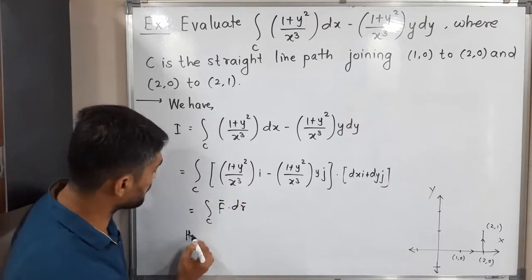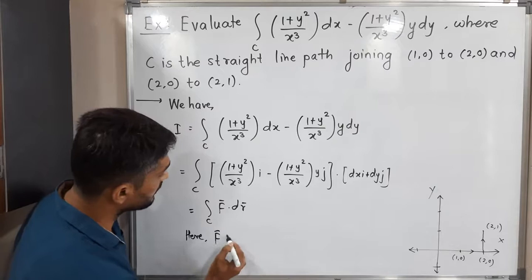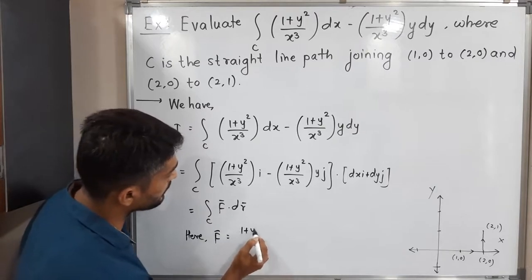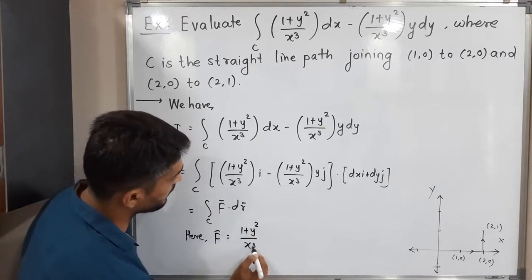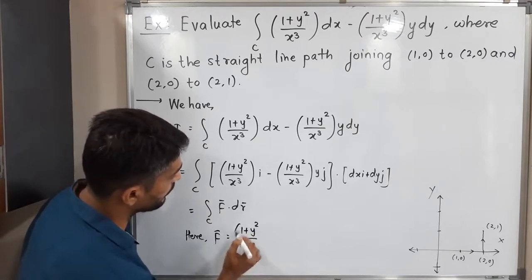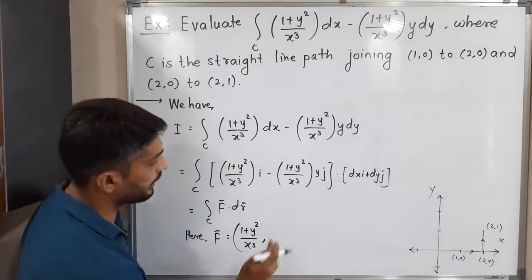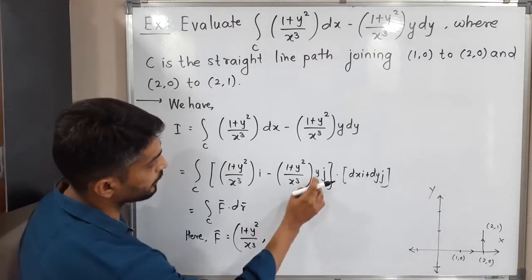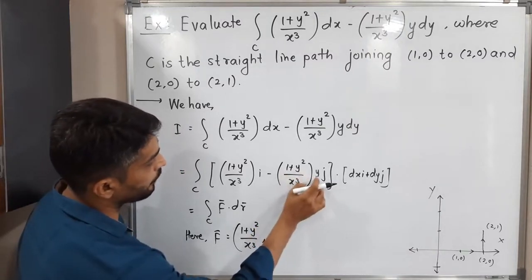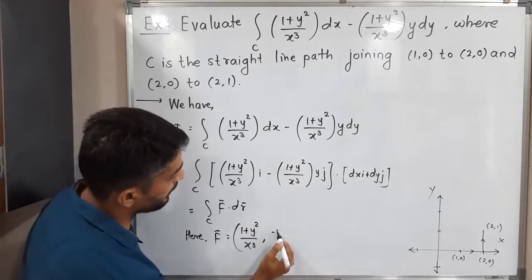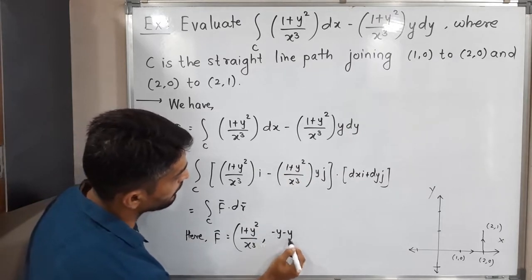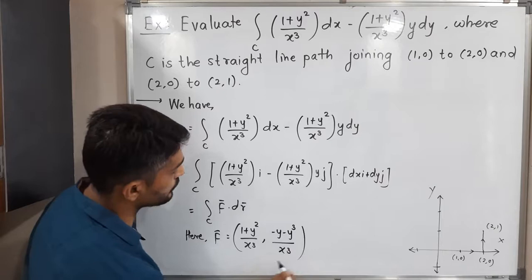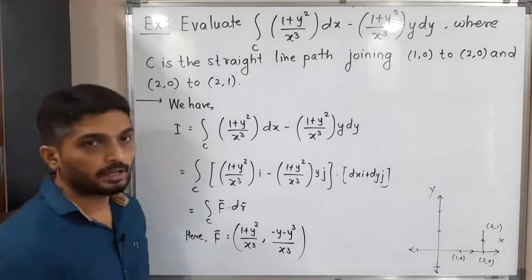Let me mention: f-bar is equal to (1 + y²/x³), and if we take the product with y in the second bracket, we will have minus y minus y³/x³. So this is our f-bar.